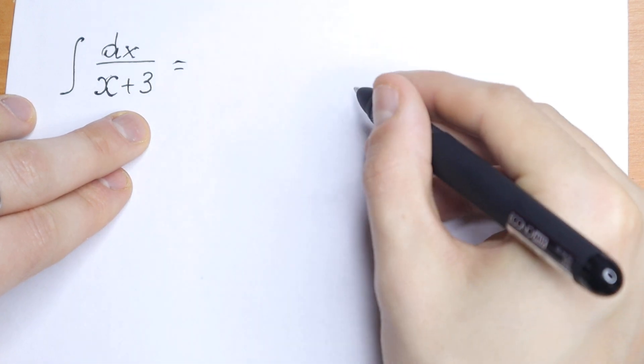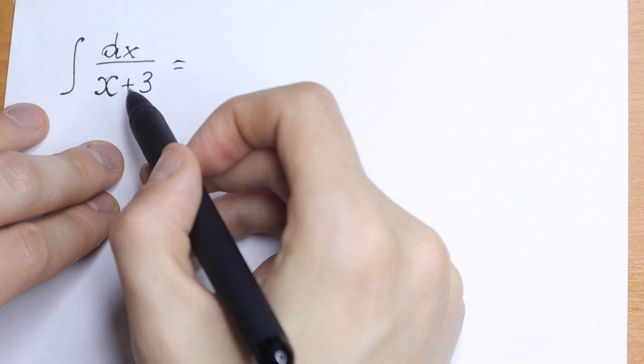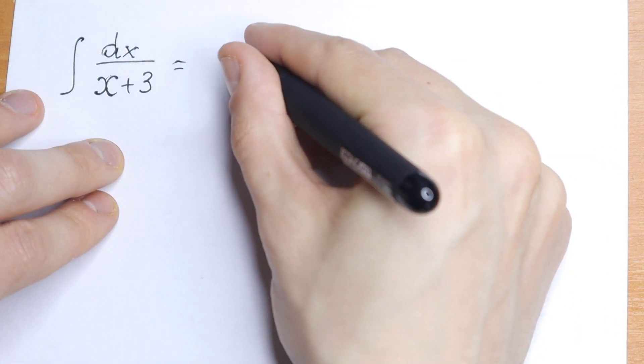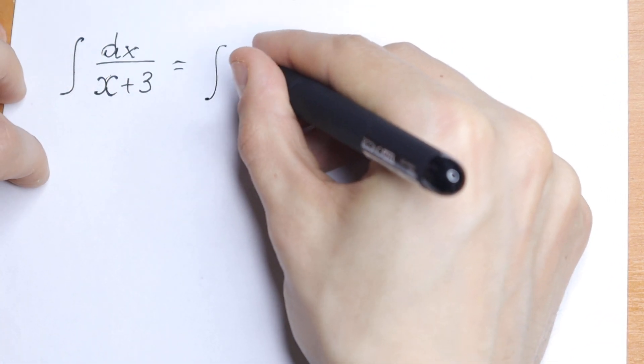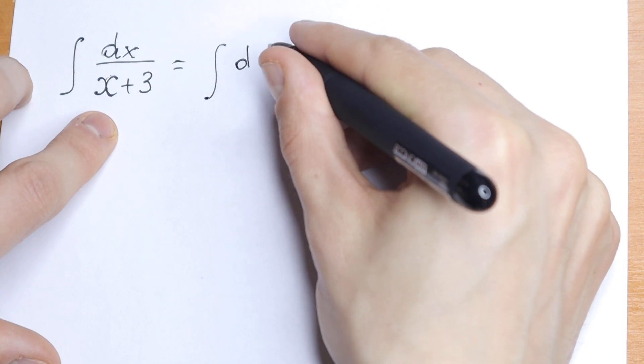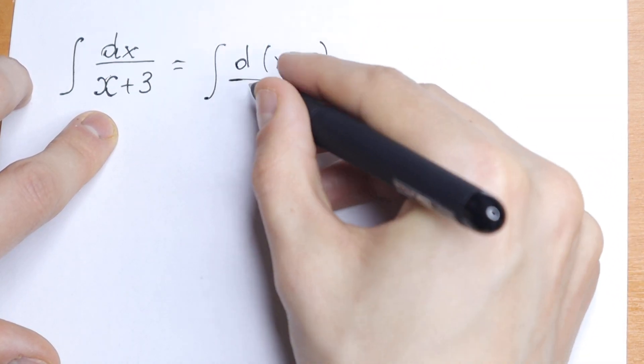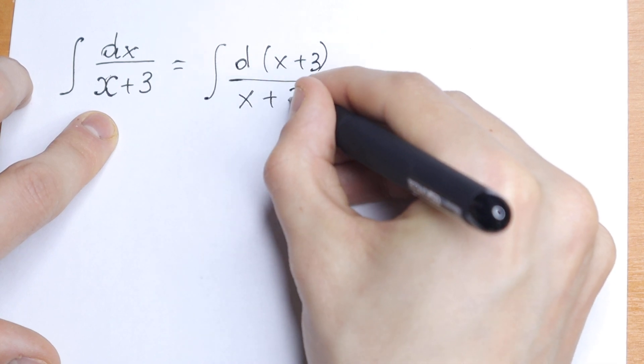I want to suggest a really good trick to solve it. We can put this x plus 3 in our differential sign, so as a result we'll have the integral, and instead of dx I put d(x+3) from our denominator, all over x plus 3.